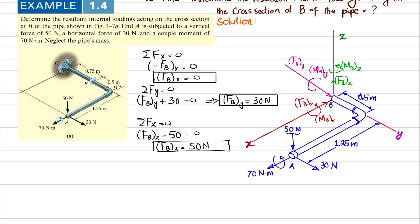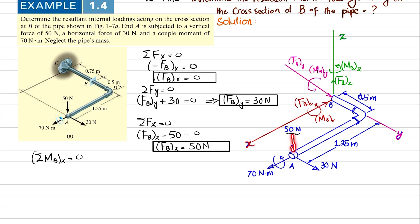We have calculated the three forces. Now we find the moments using moment equilibrium. The sum of all moments about point B around the X axis equals zero. About X, one moment is MBX, another is the 70 Newton·meter couple, and the third is the 50 Newton load times its perpendicular distance of 0.5 m. The 50 Newton load acts downward and produces a clockwise moment, so it is negative.